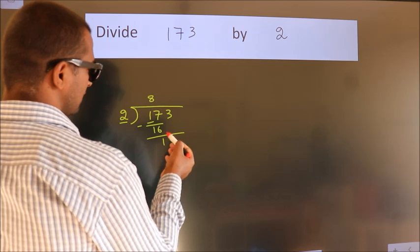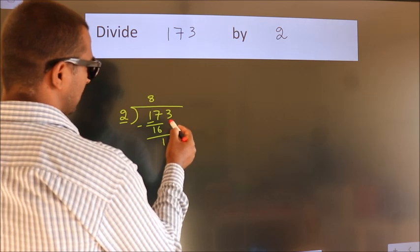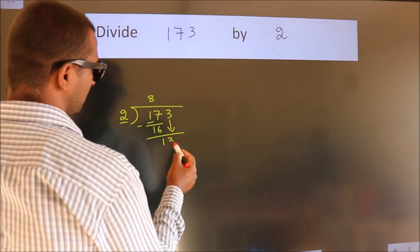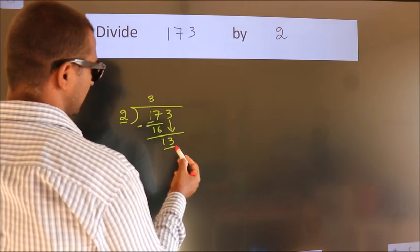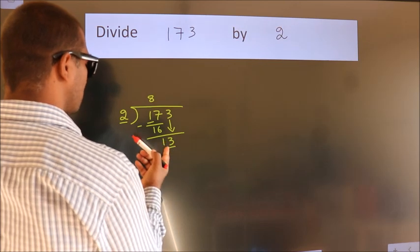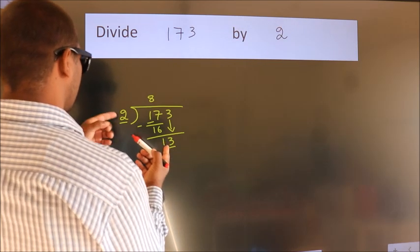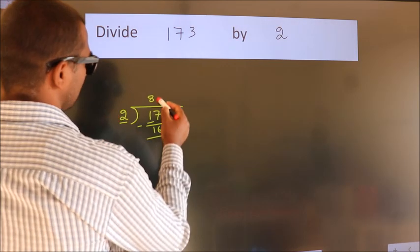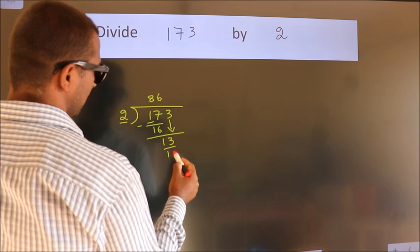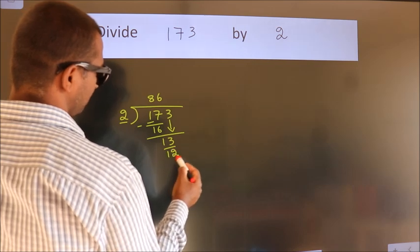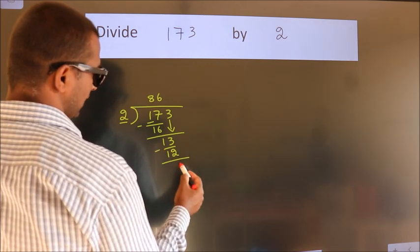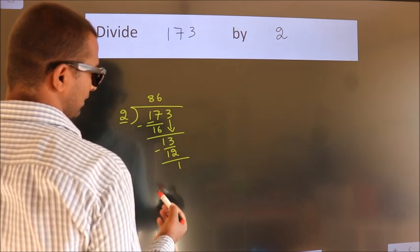After this, bring down the beside number. So 3 comes down, making 13. A number close to 13 in the 2 times table is 2×6=12. Now we subtract and we get 1.